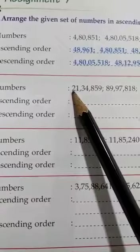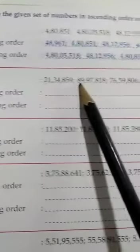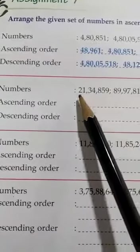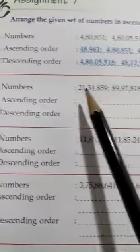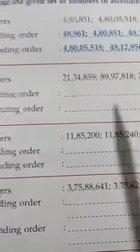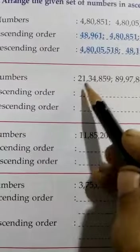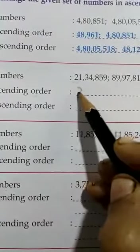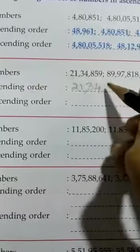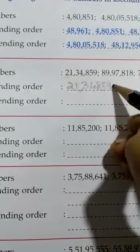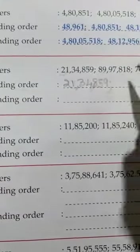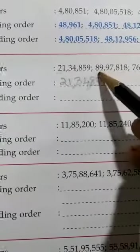The first digits are: 2, 8, 7, and 9. Which is the greatest? 9. Which is the smallest? 2. Ascending order means you write the smallest first. So the number starting with 2 — that is 21,34,859 — will be the first number you write.